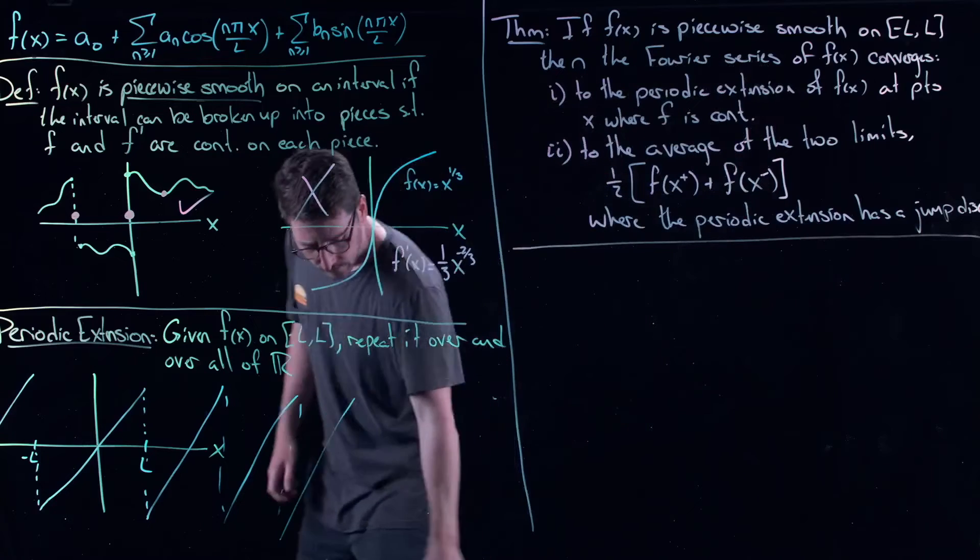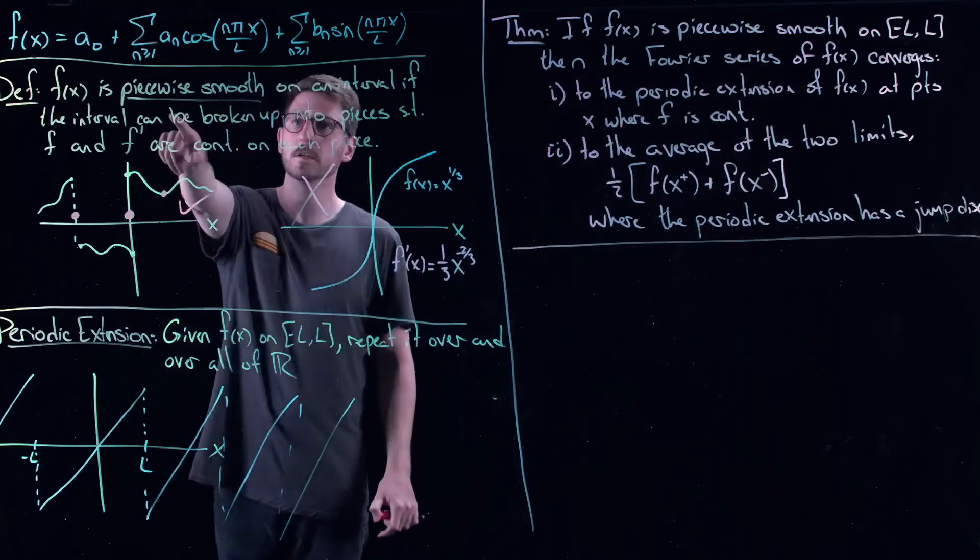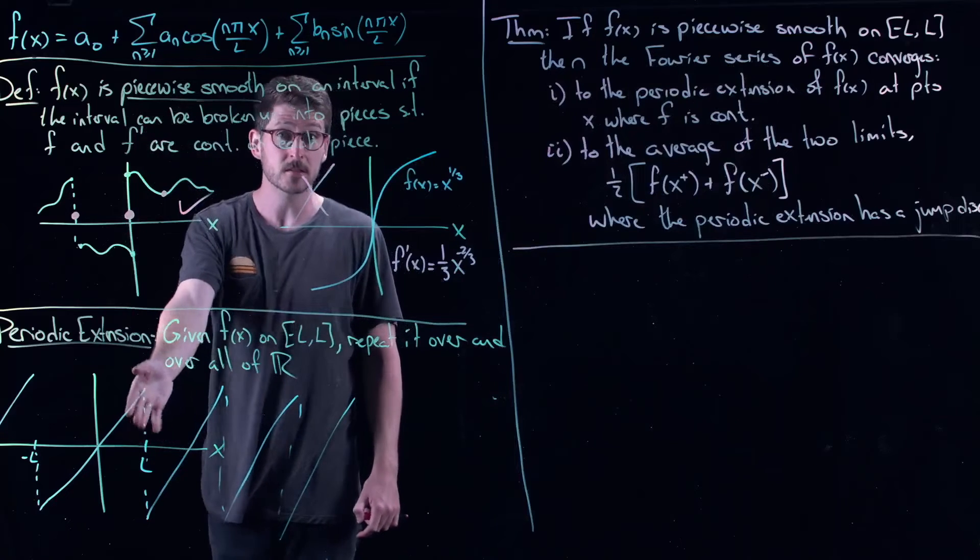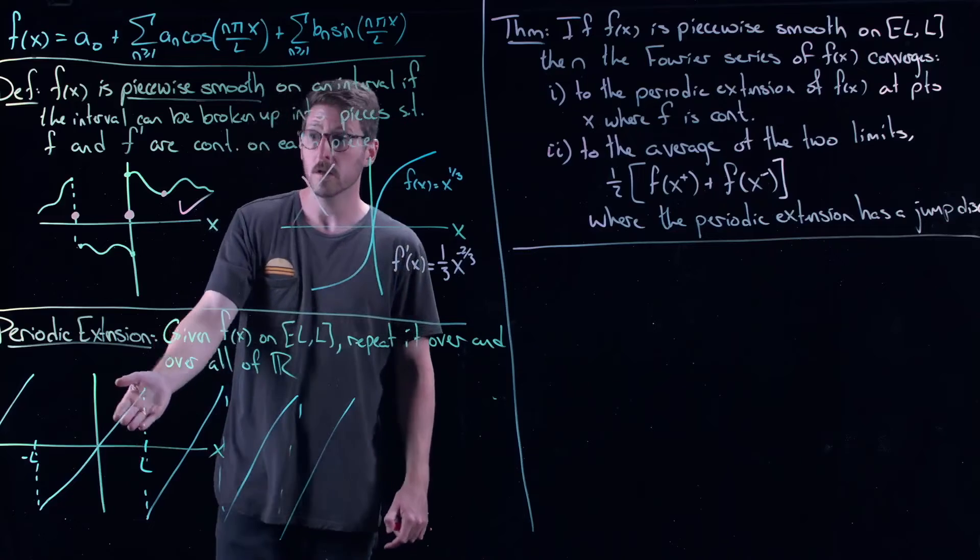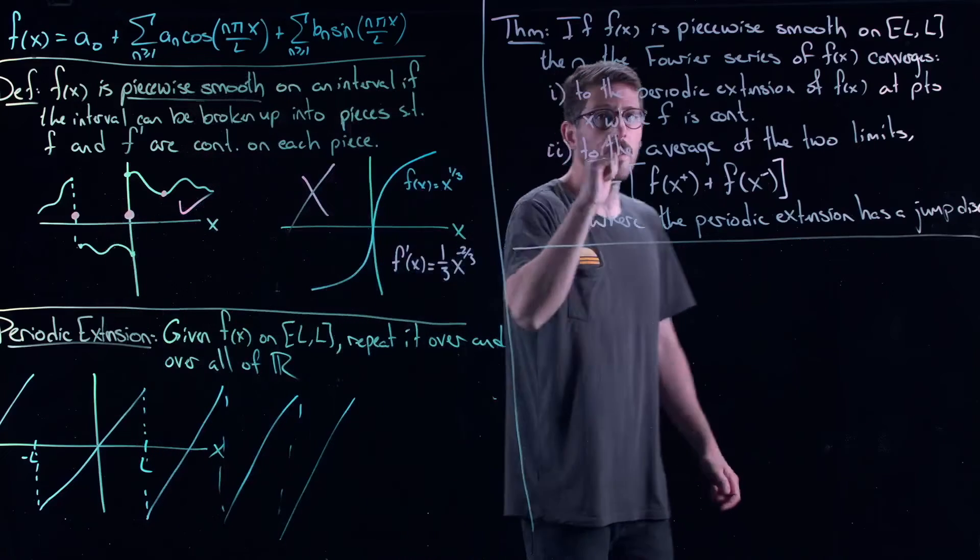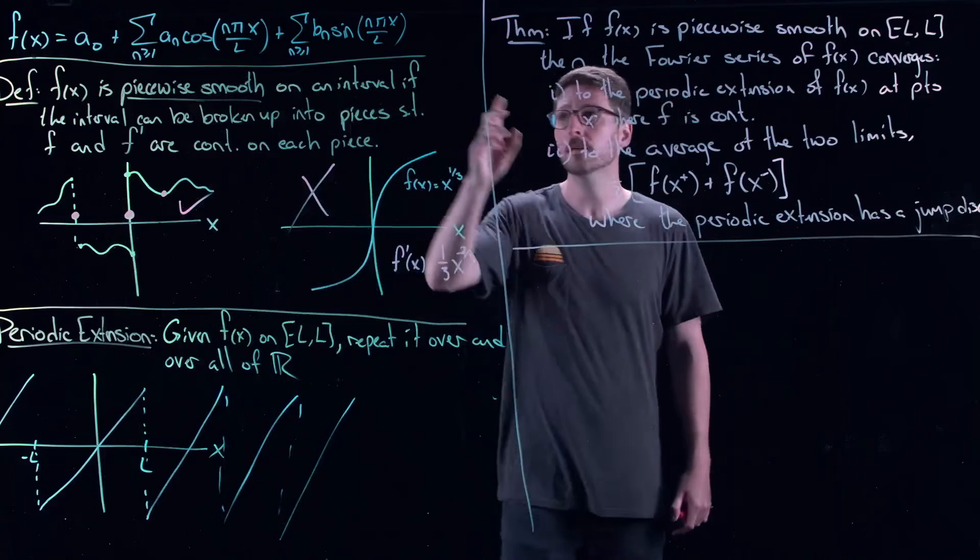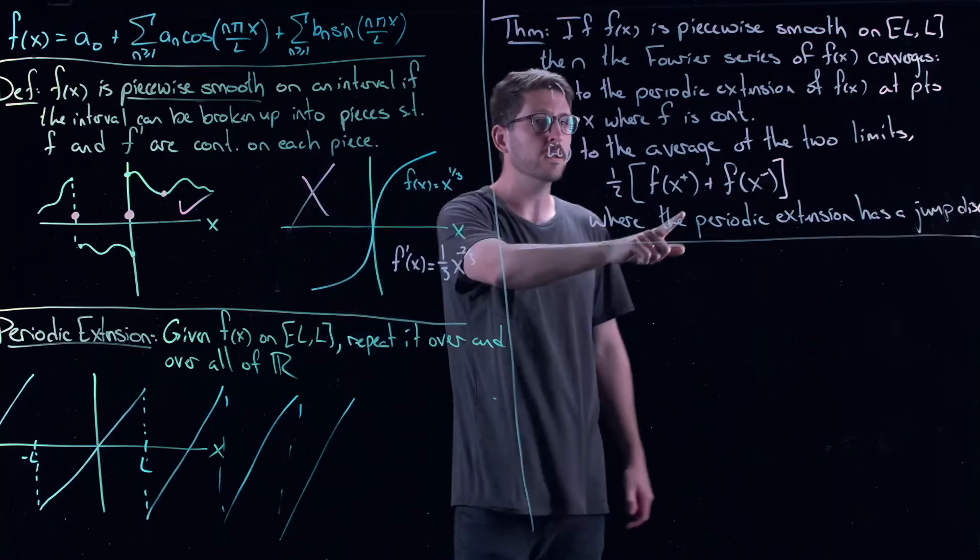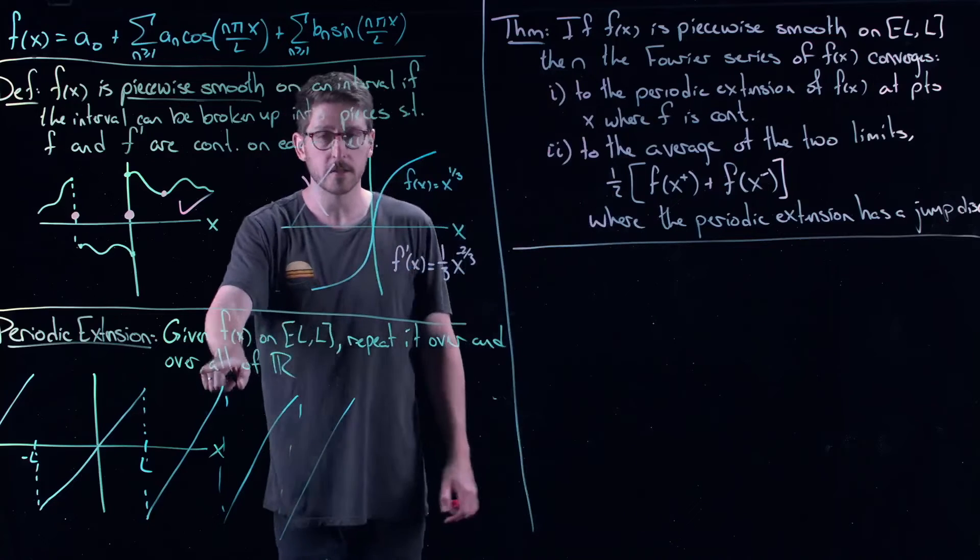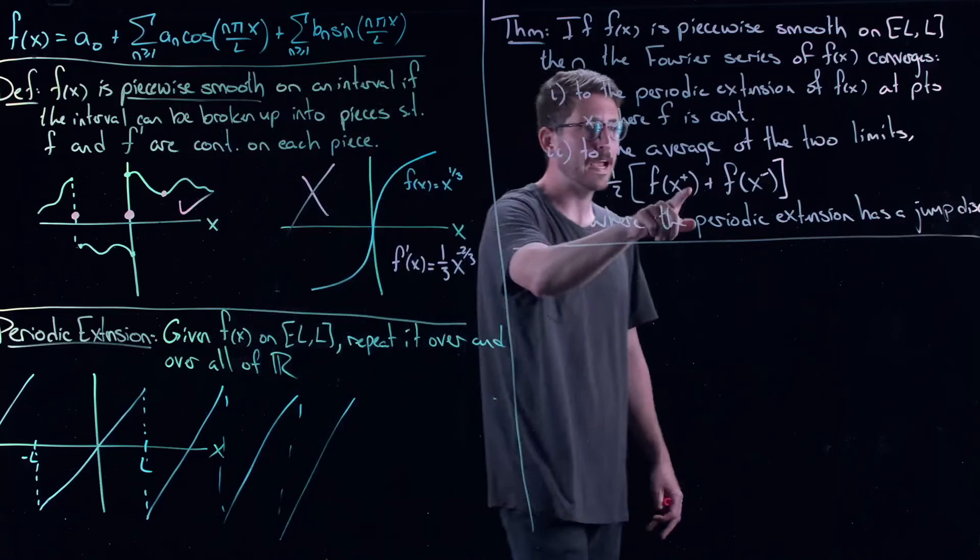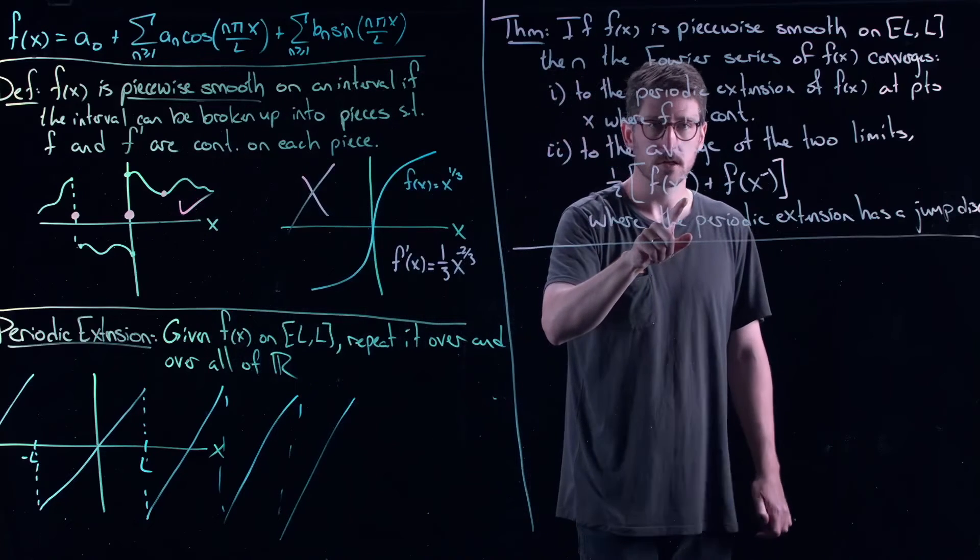There's a few fine points here. Piecewise smooth. Remember, we defined piecewise smooth in some sense to handle the periodic extension, but it actually opens up the wider class of functions that we can look at. Anywhere where we have continuity, convergence. No problem. But if we have a discontinuity, the only kind of discontinuity that's allowed by piecewise smooth functions is jump discontinuities. And that means that you get the average at the jump, essentially.